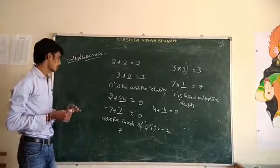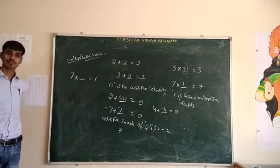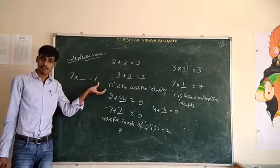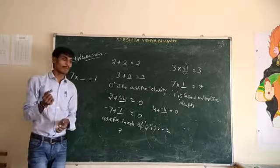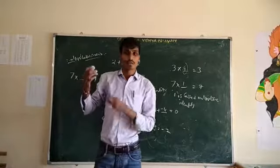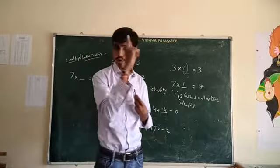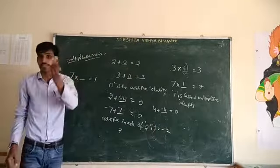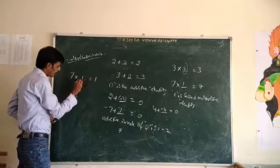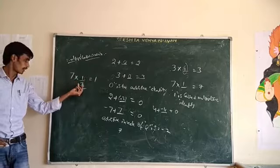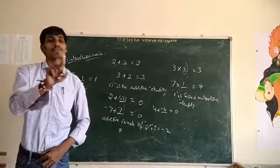Next, observe: 7 into blank is equal to 1. Which number do we multiply with 7 to get 1? When you multiply any number with its reciprocal, it gives the value 1. The reciprocal of 7 is 1 by 7, so the blank is filled with 1 by 7. So 1 by 7 is called the multiplicative inverse of 7.